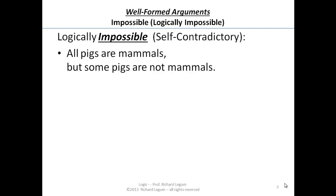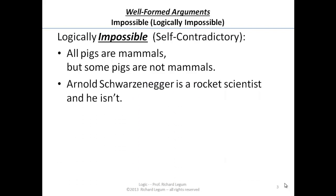Here's another example of something that's logically impossible: Arnold Schwarzenegger is a rocket scientist, and he isn't — that is, Arnold Schwarzenegger is not a rocket scientist. That's a contradiction. That can't possibly be true. Logically impossible.